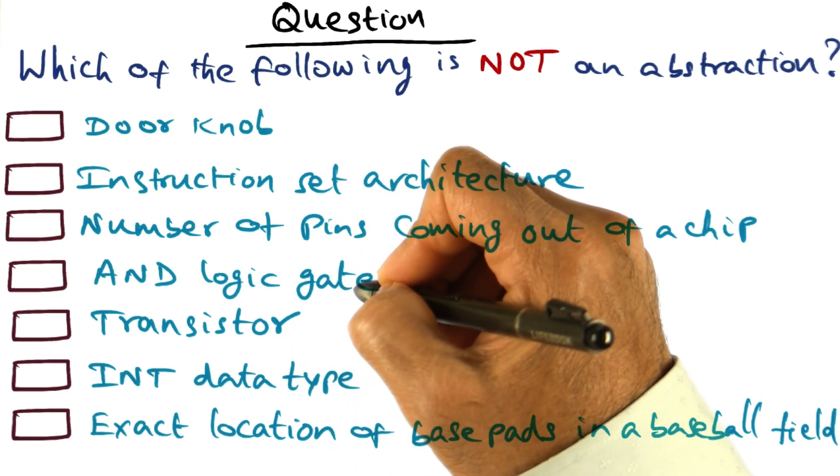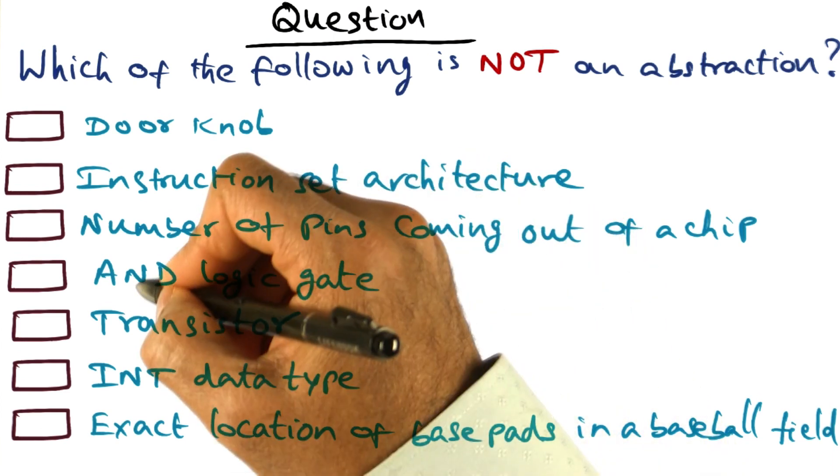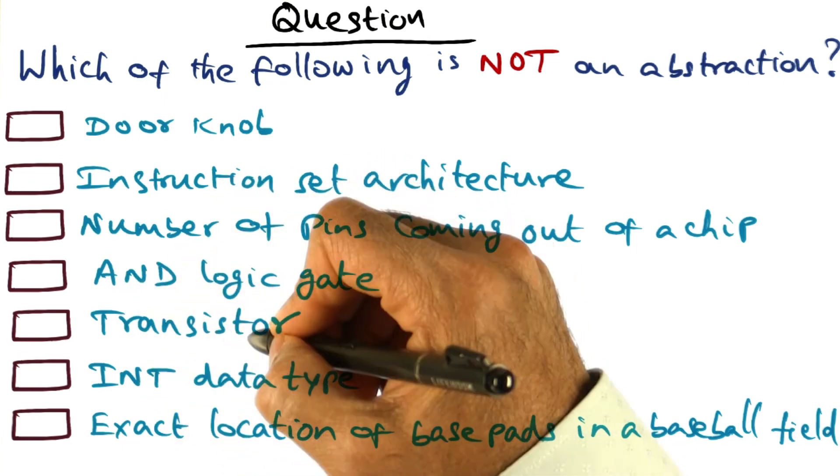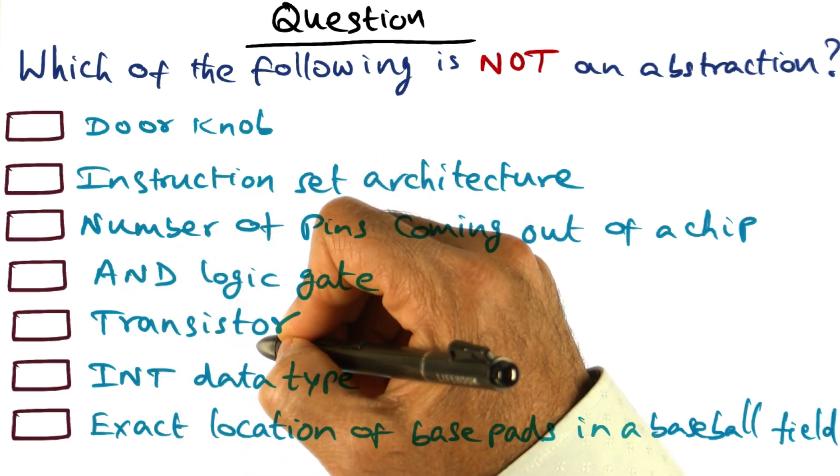And the next choice I have for you is a logic gate such as an AND gate that does the AND function. And the next item I have for you is a transistor.